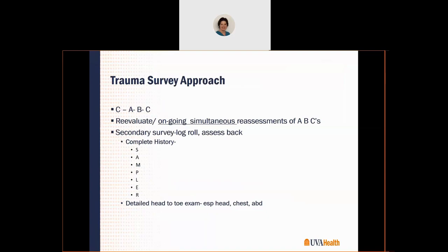The trauma survey approach is C-ABC with ongoing simultaneous reassessments. If there's a sudden change in stability, go right back to the ABCs. Once life-threatening injuries are addressed, we move to the secondary survey: a log roll to assess the back, a complete history, and a detailed head-to-toe exam. That detailed head-to-toe may sometimes occur in the ICU, making it very important to perform upon admission — you might pick up injuries such as broken bones that weren't life-threatening initially but are now identifiable once the patient is stabilized.